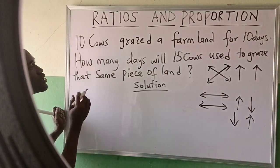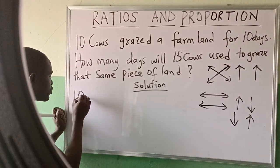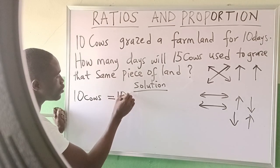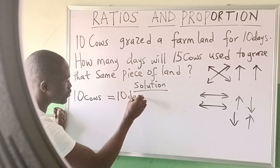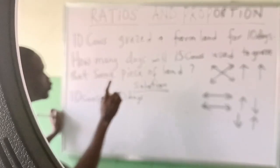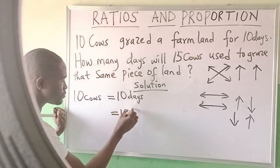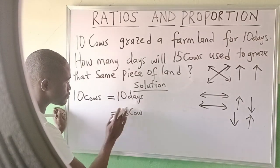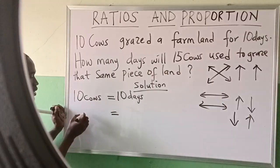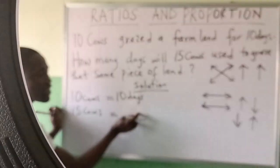Let's see what we mean. 10 cows graze a farmland in 10 days. Now how many days will 15 cows use to graze that same piece of land? I'll put 15 cows under the cow column. If I write 15 cow here it is wrong, because it is not under the cow — I'll put it here.